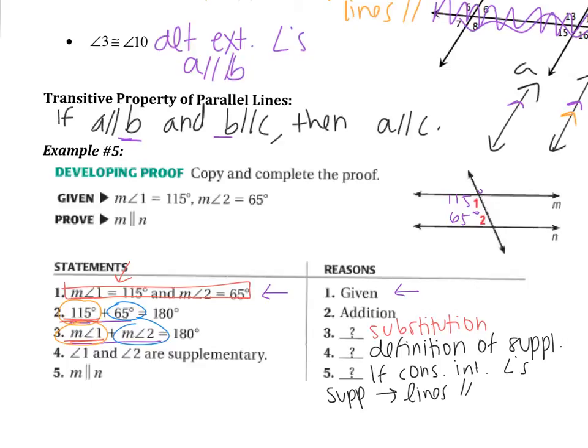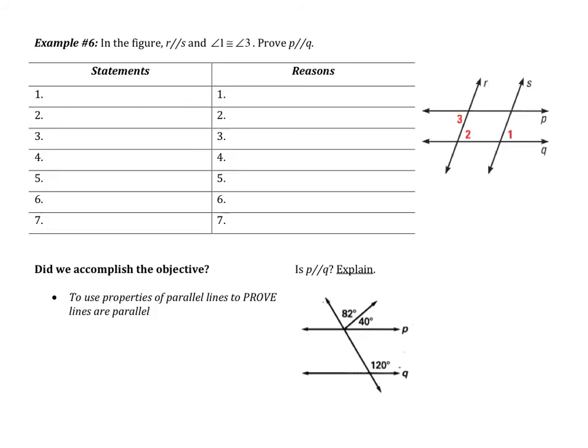If you lost me on that, that's okay — we are going to do another day of just proofs. For example 6, it says: in the figure, R is parallel to S, and angle 1 is congruent to angle 3.